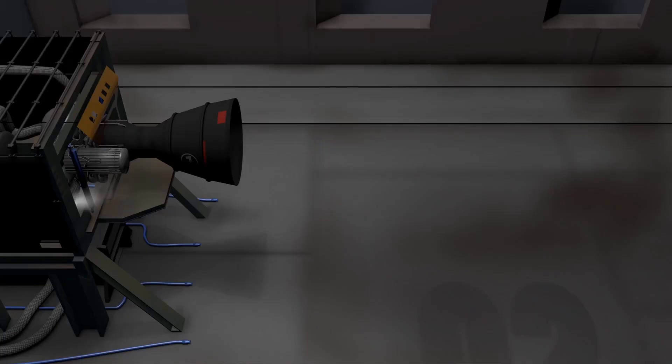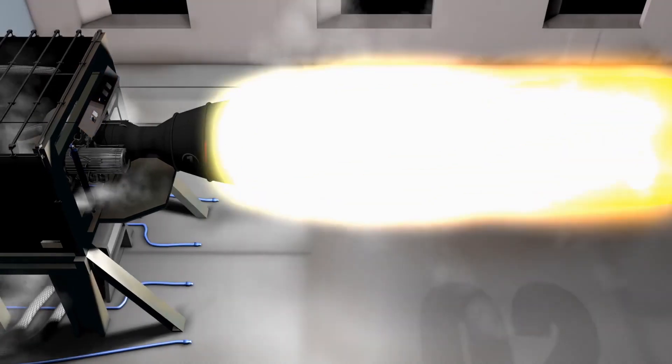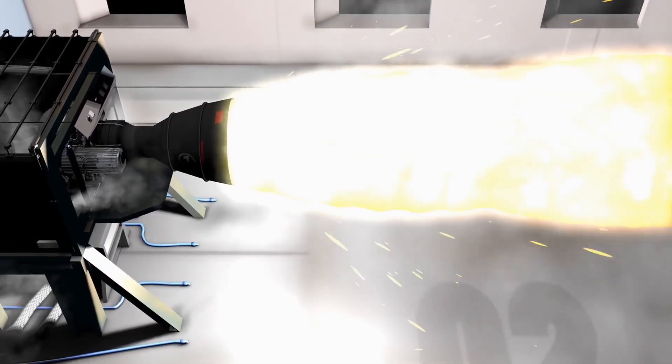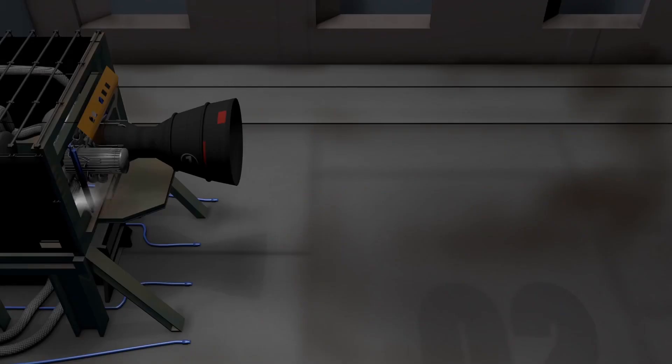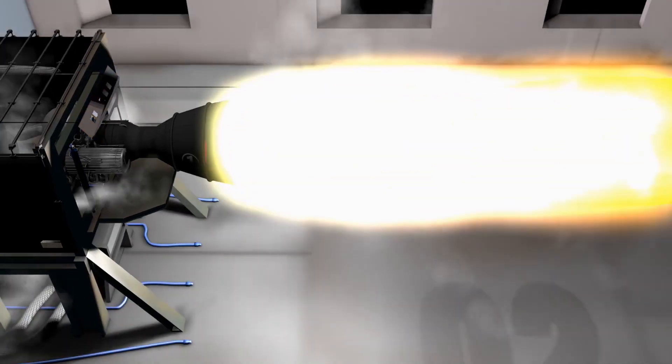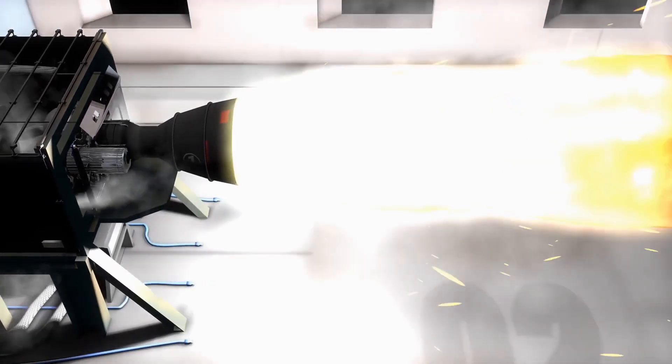1. Propellant. Rockets carry a combination of fuel and oxidizer, known as propellant. The most common propellant uses a mixture of liquid oxygen (oxidizer) and liquid hydrogen (the fuel). When these two components are combined and ignited, they undergo a chemical reaction that produces a large amount of hot gas.